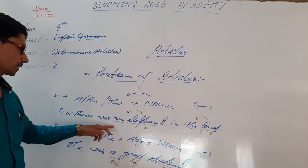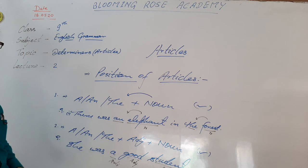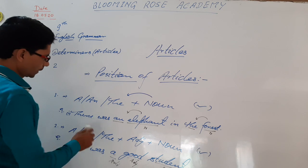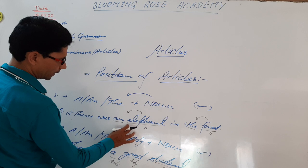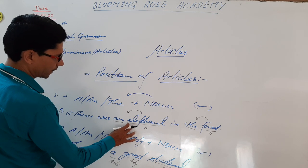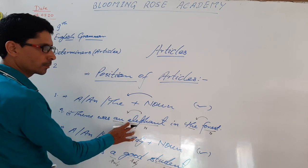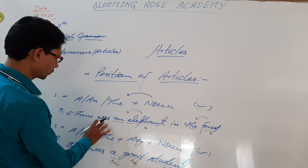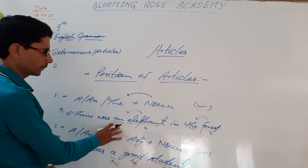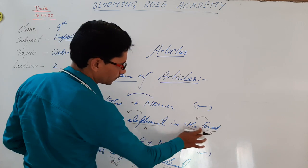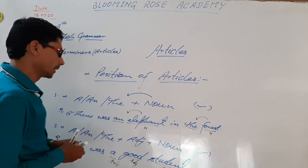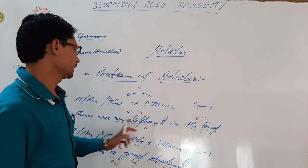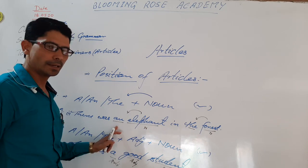For example: 'There was an elephant in the forest.' In the sentence, elephant is a singular countable noun, and before a singular countable noun we use the indefinite article a or an. So 'an' is used before elephant. The next word is forest — before forest, 'the' has been used. This means articles are always used just before the noun.